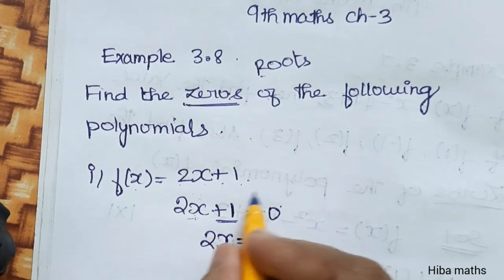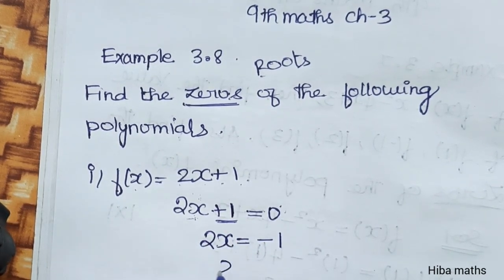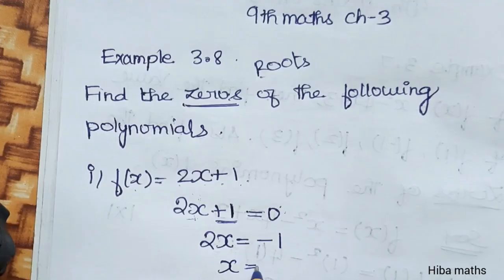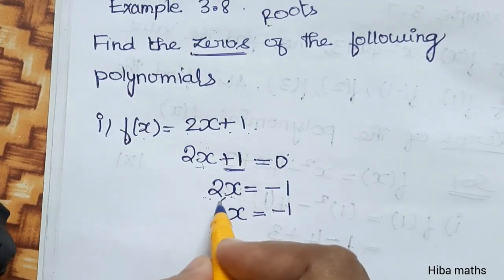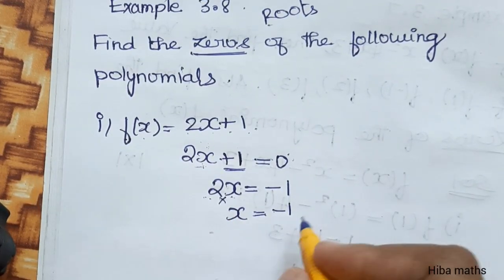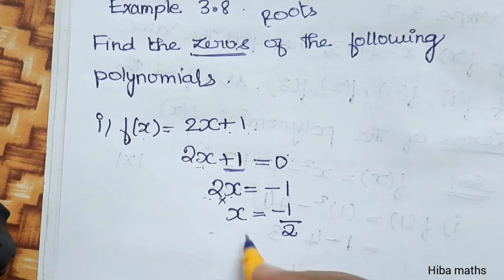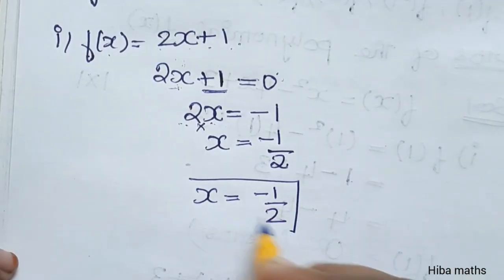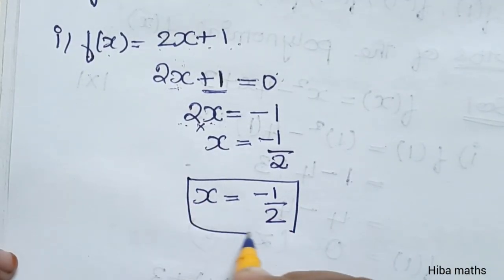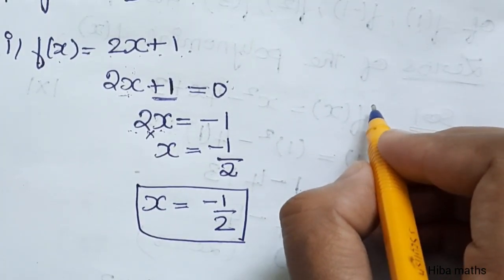2x = -1, and then x = -1/2. The x value, zero of the polynomial, is minus 1 by 2. It's very easy.